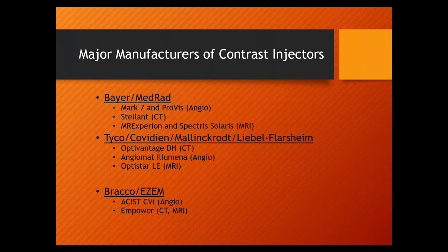The third company is Braco EZM, and they are charging up. They make the ACES CBI, the Empower CT, and the Empower MR. What they've started doing is giving companies the machine free - just sign a contract saying you'll buy your syringes and fluids from them every year. In the last few years we started doing training on the ACES injectors, because requests for them have been increasing every month.